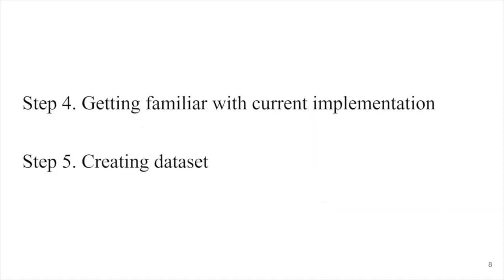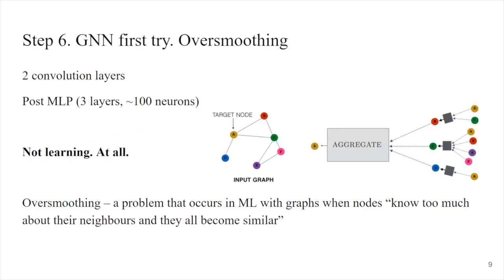So I got familiar with the current implementation and architecture, and then I created the dataset by taking the particles data, the relations data, and creating the actual graphs from them — all done in PyTorch Geometric. I started doing the actual implementation of the graph neural network and ran into one problem. I took the more or less default architecture — two convolution layers and then a post-MLP — and found that it was not learning at all.